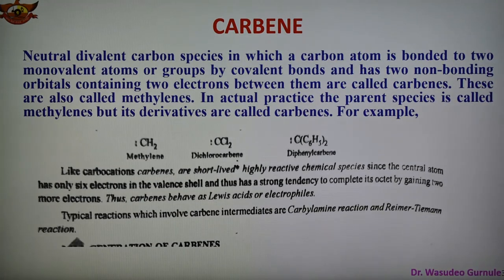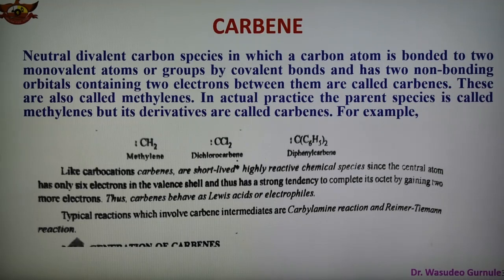Carbenes are short-lived and highly reactive species. In carbene, the central carbon atom has 6 electrons in the valence shell, and therefore has a strong tendency to complete the octet by accepting 2 electrons. Carbene behaves like a Lewis acid and is also an electrophile.